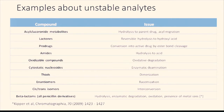Firstly, acyl glucuronide metabolites can be unstable because of the hydrolysis of the parent drug and acyl group migration. Lactones can also be unstable because of a reversible hydrolysis to hydroxyl acid. Pro-drugs can convert into the active drug by ester bond cleavage. Oxidative compounds can degrade by oxidation. Amides can degrade by hydrolysis to acids.